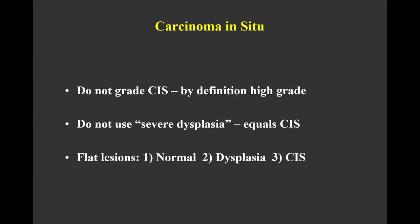When you're talking about flat lesions, excluding reactive lesions, you have three choices: it's either normal, or CIS, or it's something in the neoplastic sequence that doesn't make it up to CIS — and that's what we call dysplasia.